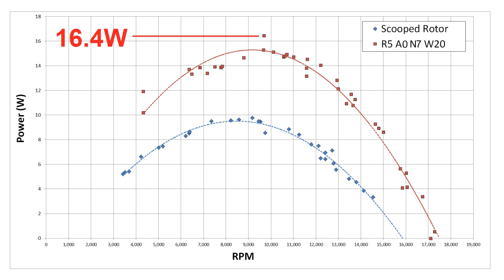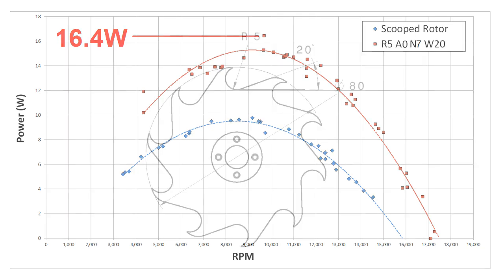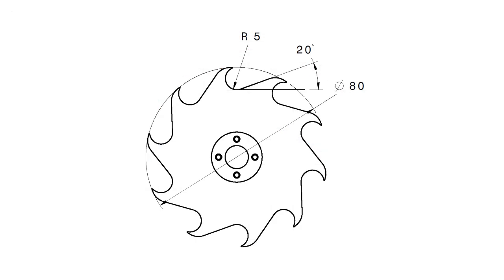I suspected the number of notches or blades probably had a significant effect on power, so for the next test, I printed a design with 10 notches. Here, the notches are cut at a 20 degree angle relative to the tangent line to allow them to fit.